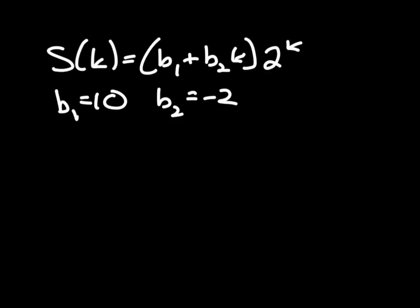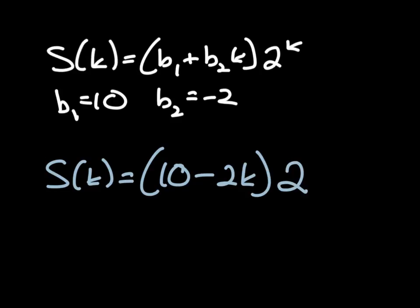So now let's just put them in where you see them, here and here, and we will have our final solution. So our final closed form solution is S(k) = (10 - 2k)·2^k. And that is our solution for that recurrence relation with repeated root.